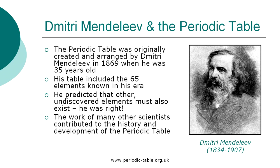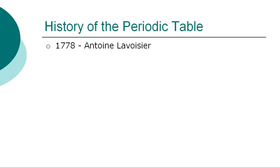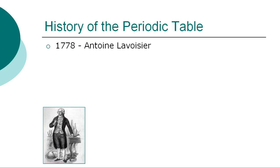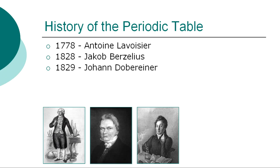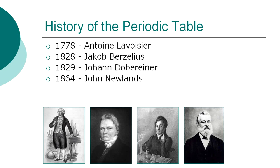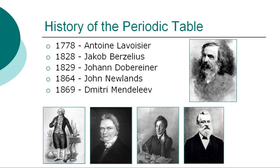The work of many other scientists contributed to the history and development of the Periodic Table. In 1778, Antoine Lavoisier wrote the first extensive list of elements containing 33 elements and distinguished them between metals and nonmetals. In 1828, Jacob Brazilius developed a table of atomic weights and introduced letters to symbolize elements. In 1829, Johan de Beriner grouped together elements based on similarities and patterns. In 1864, John Newlands arranged the known elements in order of atomic weights and observed similarities between some elements. And in 1869, the Russian scientist Dmitry Mendeleev created the table based on atomic weights, but arranged periodically with elements with similar properties under each other.